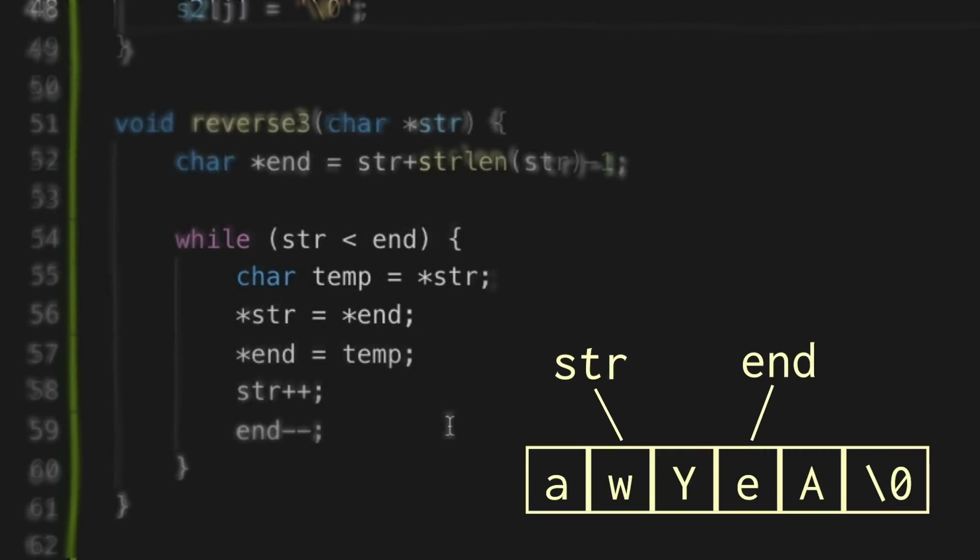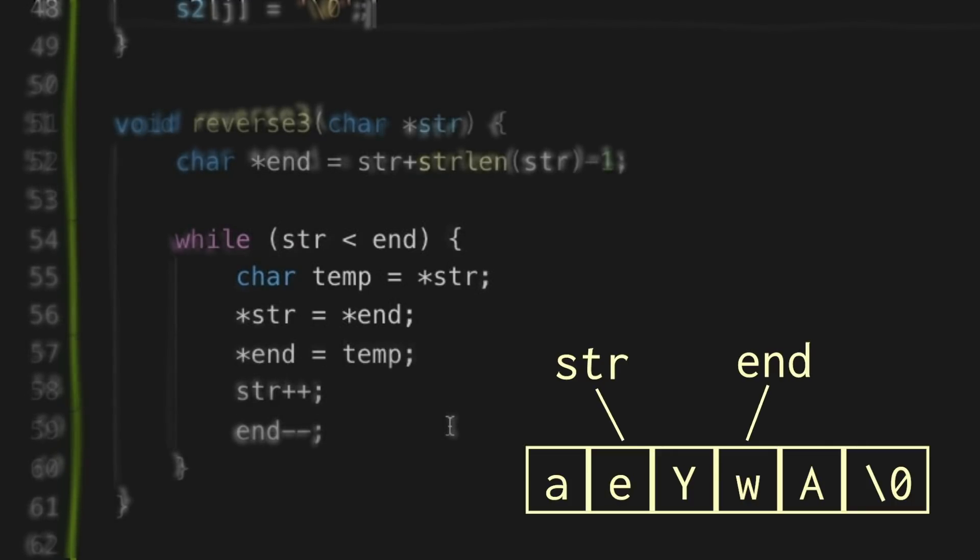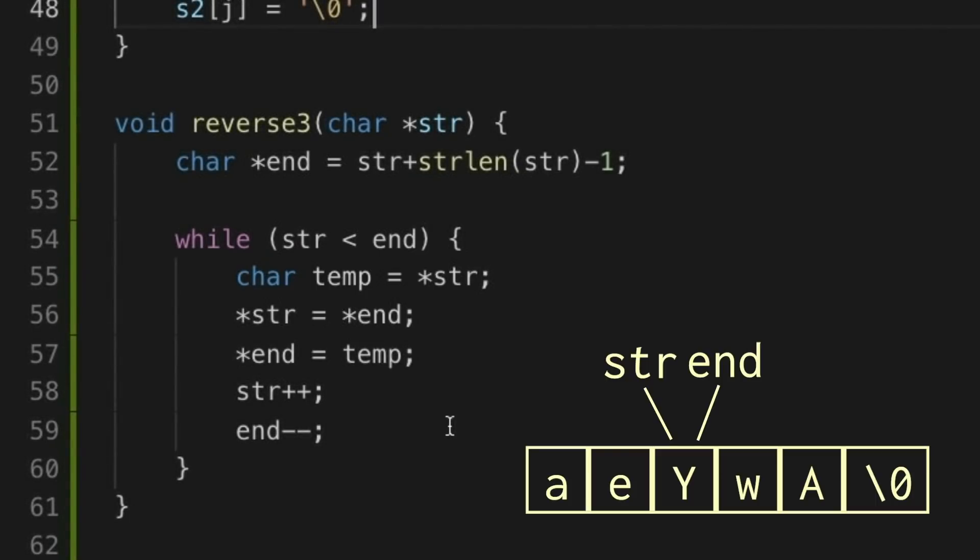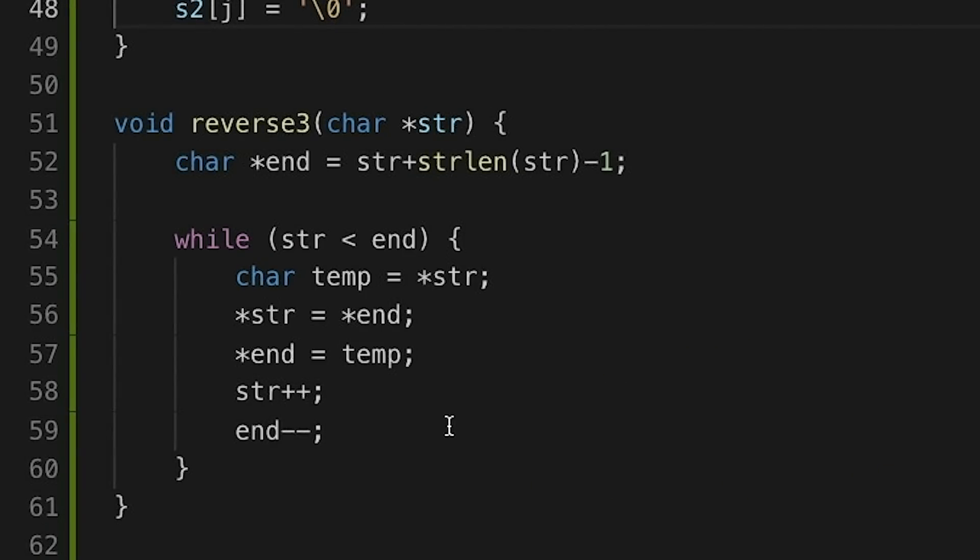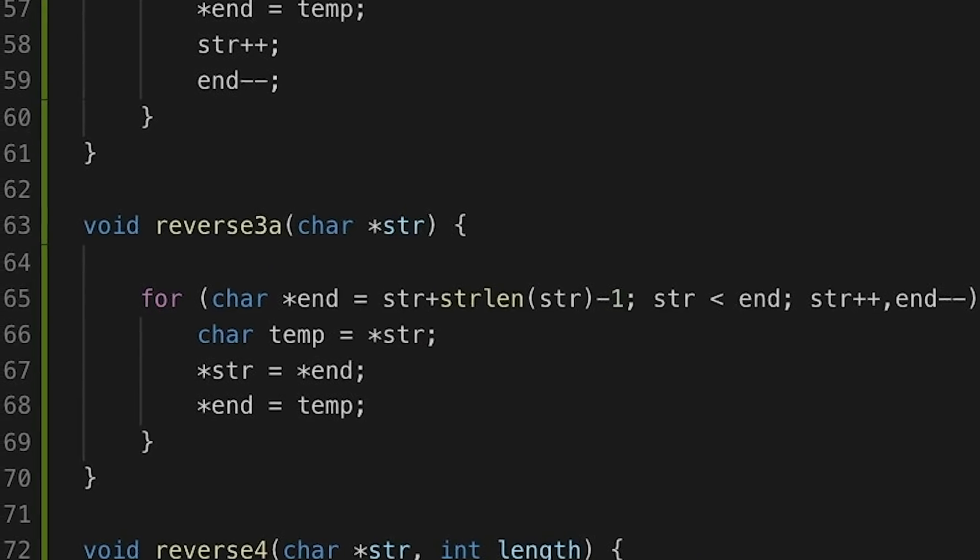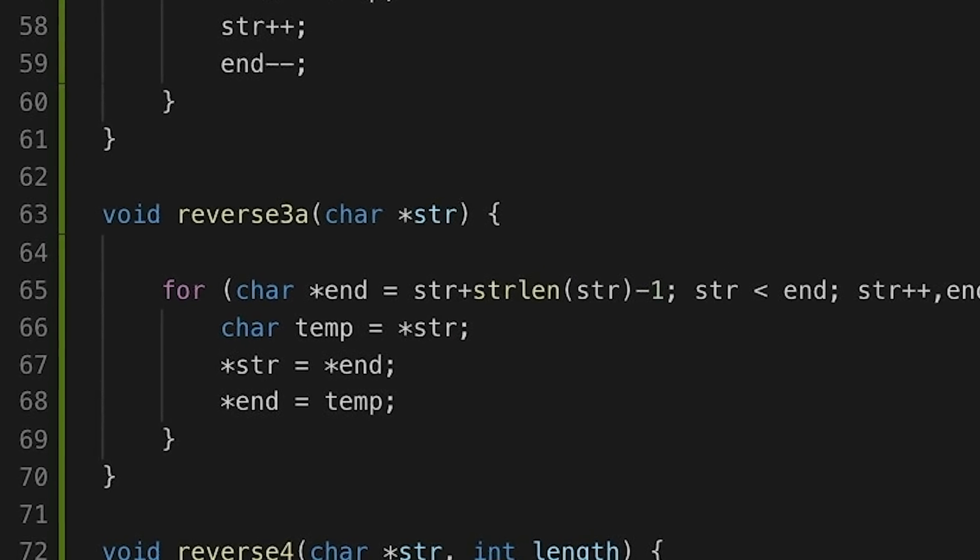Now all that pointer action might make some of you uncomfortable. If it's not your thing, that's totally cool. But some of you that love pointers, that might be a good option. And 3a down here is just the for loop version, for those who prefer a little for loop to a while loop. I'm not here to judge, you do you, my friends.